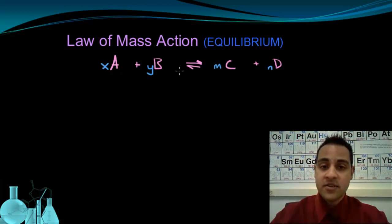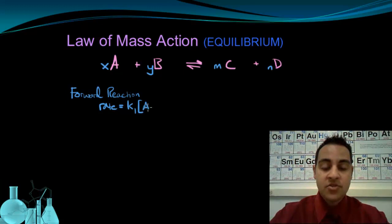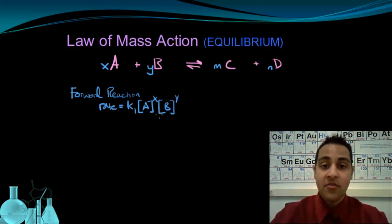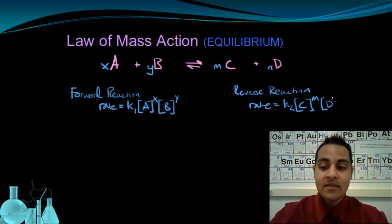We'll consider the forward reaction and then the reverse reaction separately. For the forward reaction — A and B forming C and D — we can write a rate expression: the rate of the forward reaction equals a specific rate constant K1 times the concentration of A to the x power times the concentration of B to the y power. For the reverse reaction, the rate equals a different specific rate constant K2 times the concentration of C to the m power times the concentration of D to the n power.